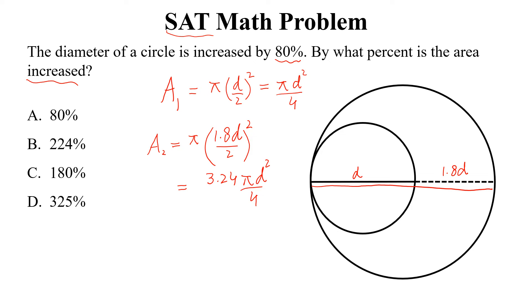Now, the percent increase is equal to 3.24 minus 1 into pi d square divided by 4. This minus this divided by this.